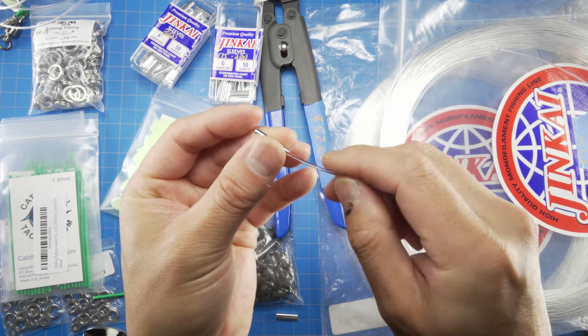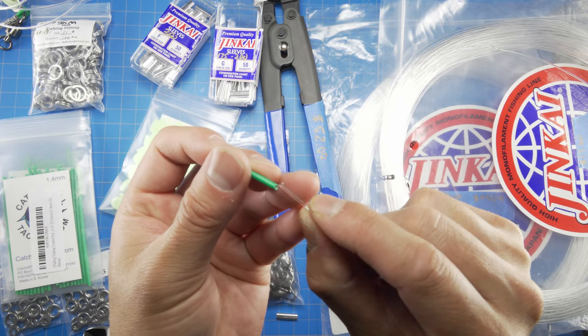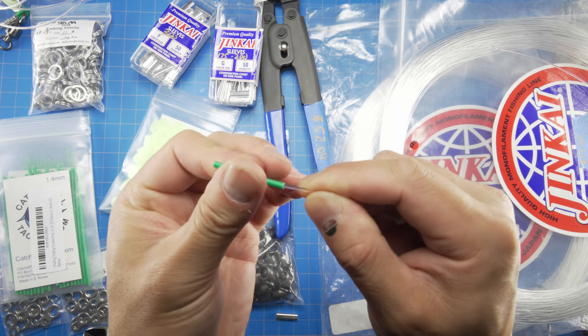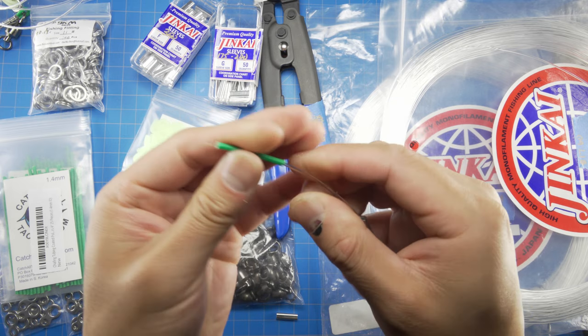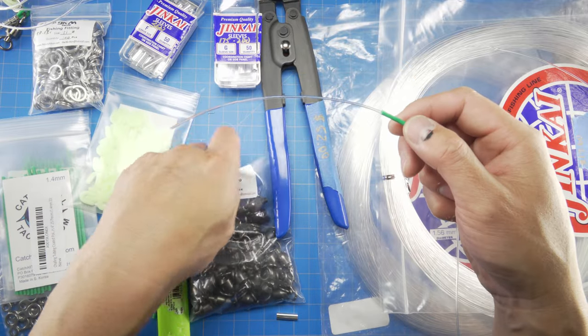So we'll stuff this in first. Now the chafing tube. And the easiest way to get it in is just to kind of like twirl it back and forth. Now we got it in.